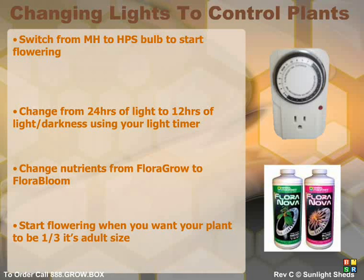We recommend you start the flowering stage — which is when you start the 12 hours of darkness — once your plant is one third the size you want it to be as an adult. This forced flowering causes hormonal changes that allow the plant to be fully developed at, say, 15 inches tall, rather than normally growing 3 to 4 feet tall.